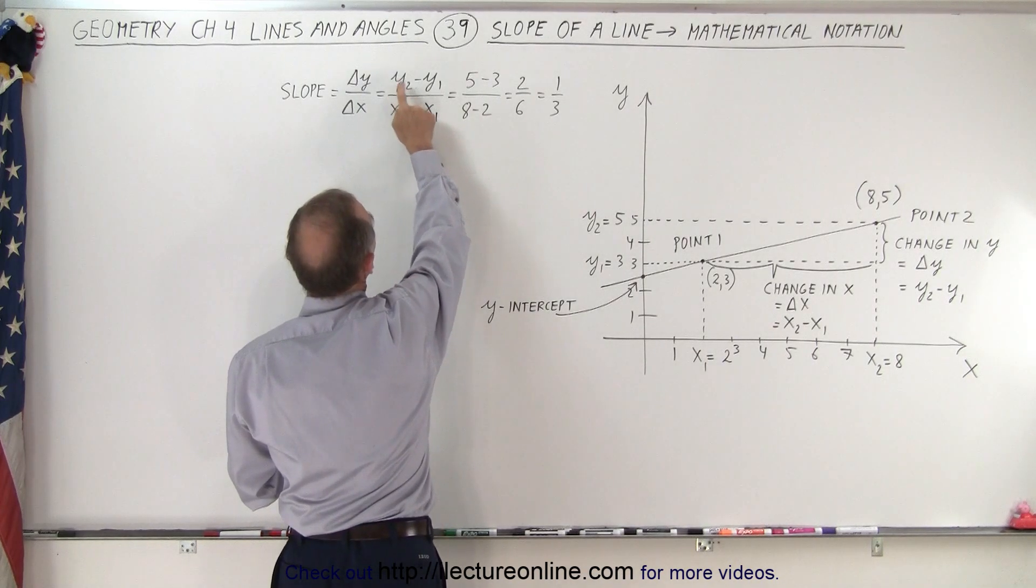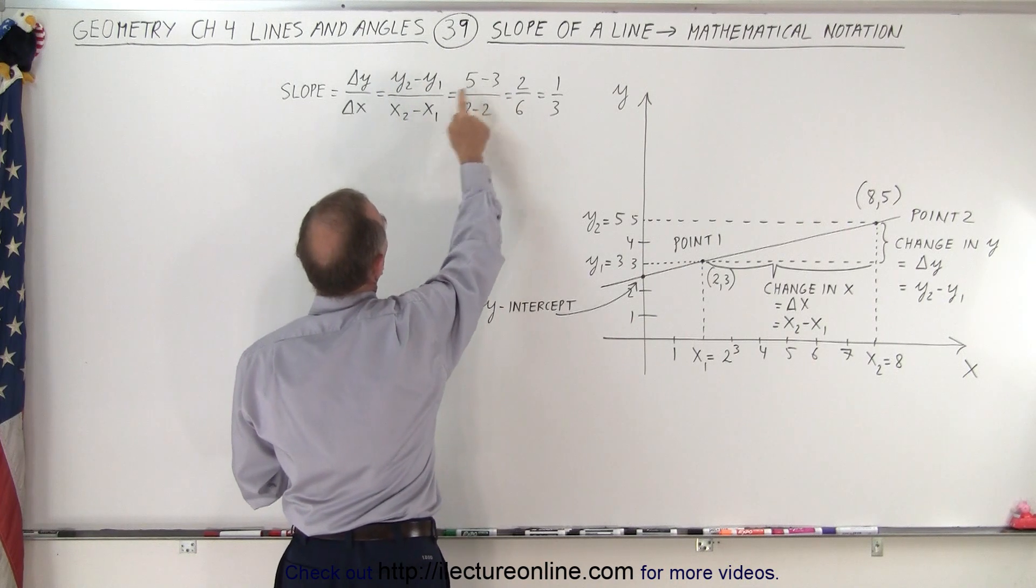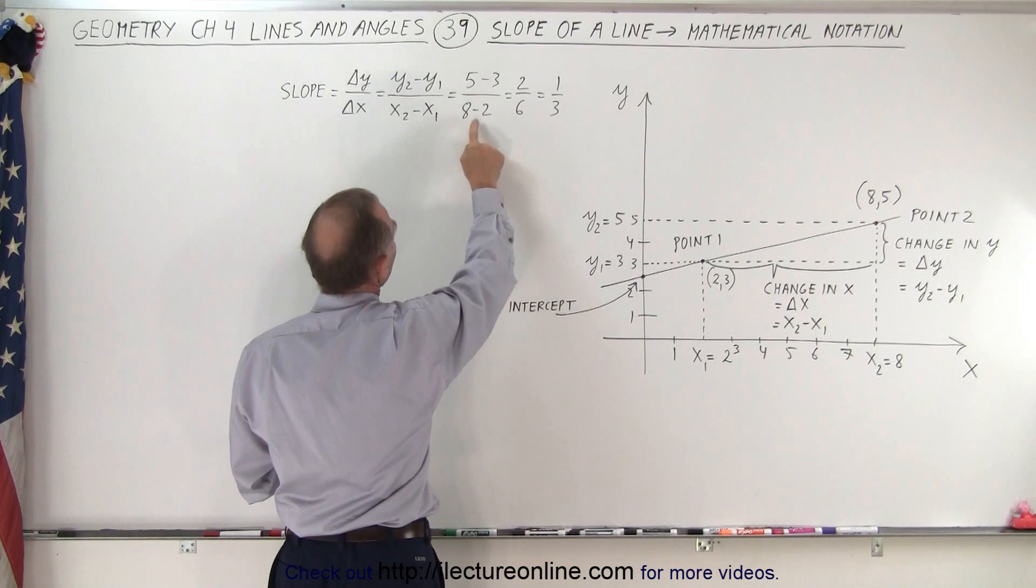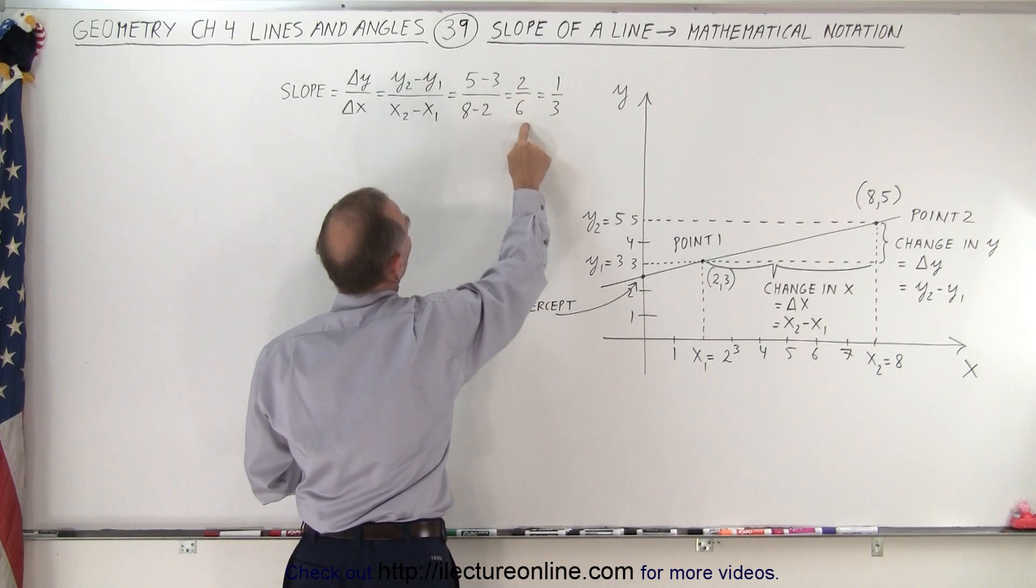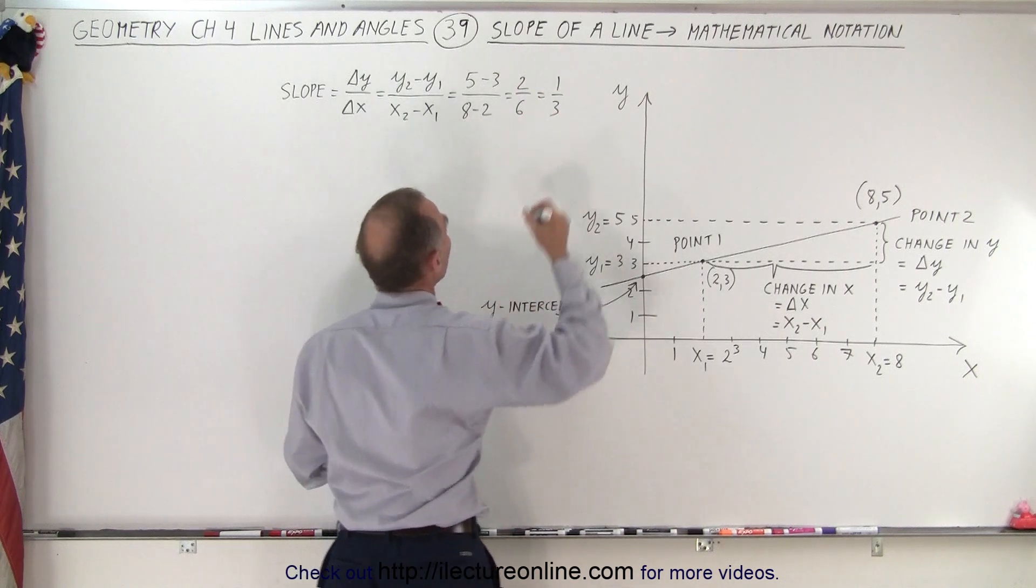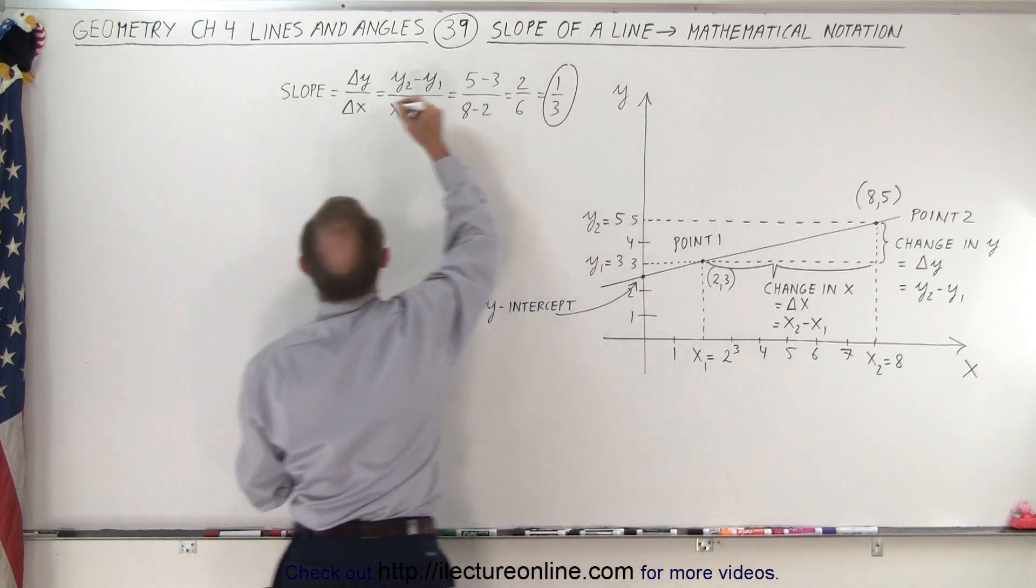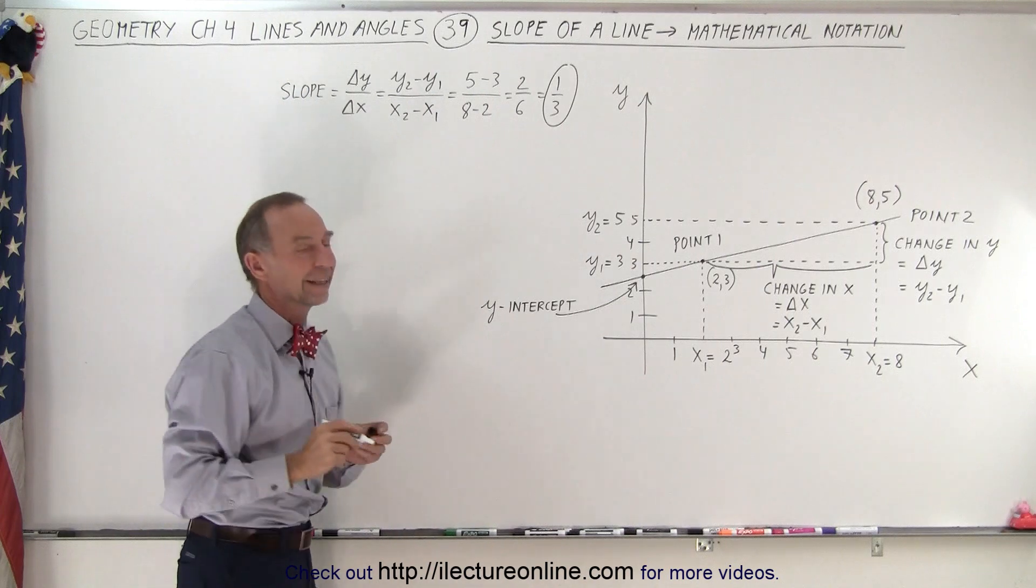Here you can see from y2 minus y1, we get 5 minus 3. x2 minus x1, we get 8 minus 2. That's 2 over 6, or 1/3. So 1/3 is the slope of that line.